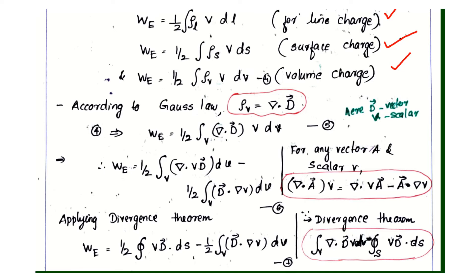Using the vector identity: del-dot(V·A) equals del-dot(V·A) minus A·del(V), where A is a vector quantity and V is a scalar. Splitting the integral using this identity gives the first term as the integral of del-dot(V·D) and the second term as minus the integral of D·del(V).